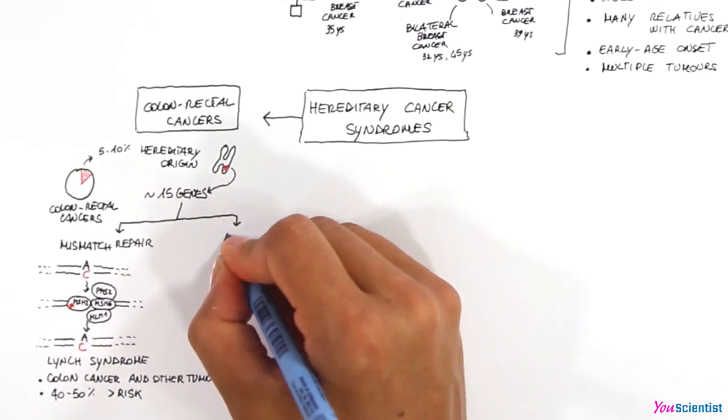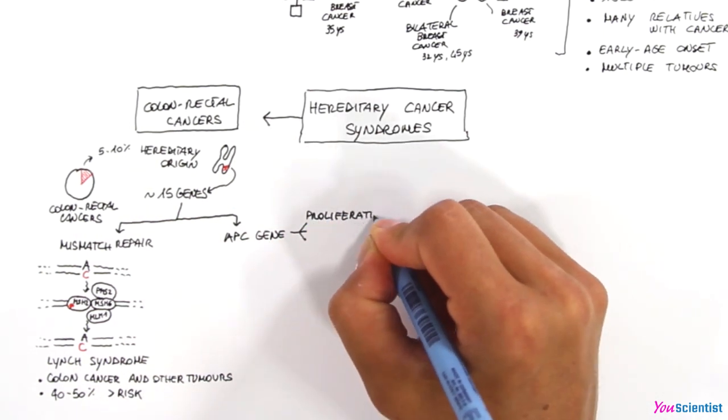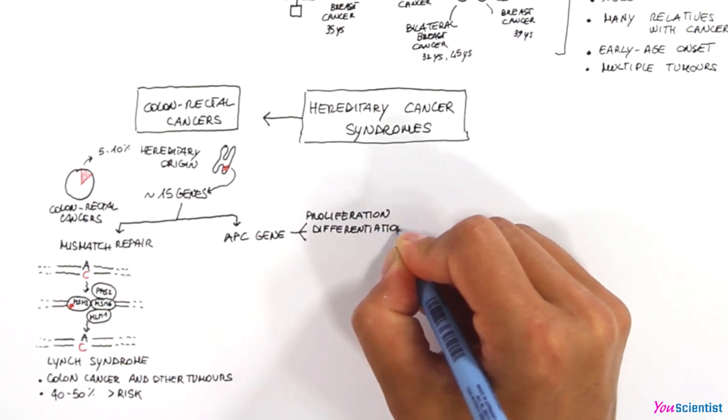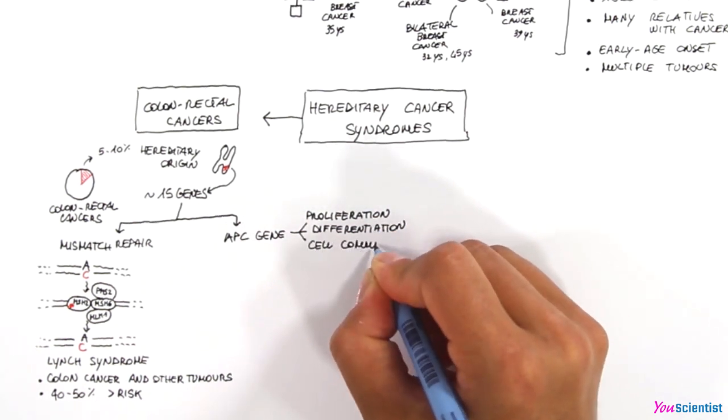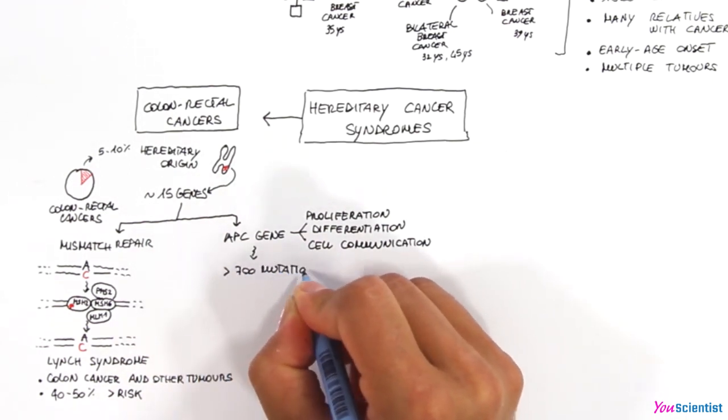Another gene involved in hereditary colon cancer syndromes is APC, which controls several cellular processes, from cell proliferation and differentiation to cell-to-cell communication. More than 700 mutations in APC gene have been discovered.